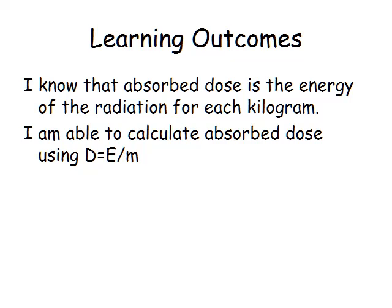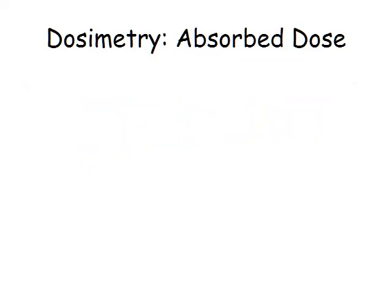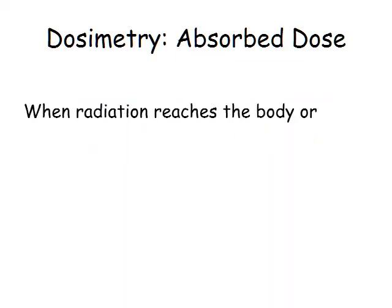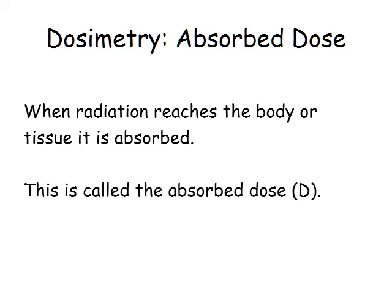When radiation reaches our body or tissue, it is absorbed. The absorbed dose takes into account the energy that reaches the tissue or the body and the mass of that part that is exposed.